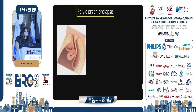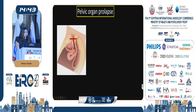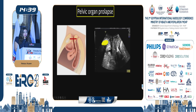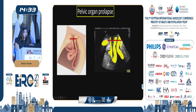Pelvic floor ultrasound can help us assess pelvic organ prolapse. We draw a line along the lower border of the symphysis pubis to assess the relation of each organ to this line — either the bladder neck, the uterus, or the rectal ampulla — and we assess these relationships during rest and during straining.